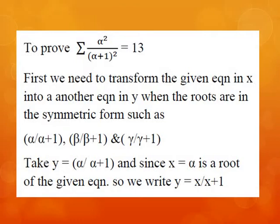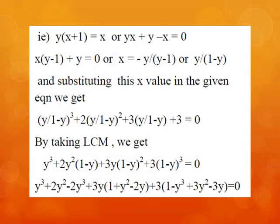We take y = α/(α+1). Since x = α is a root of the given equation, we write y = x/(x+1), so y(x+1) = x, giving yx + y − x = 0, or x(y−1) + y = 0, therefore x = −y/(y−1) = y/(1−y). Substituting this x value into the given equation, we get [y/(1−y)]³ + 2[y/(1−y)]² + 3[y/(1−y)] + 3 = 0. Multiplying through by (1−y)³, we get y³ + 2y²(1−y) + 3y(1−y)² + 3(1−y)³ = 0.